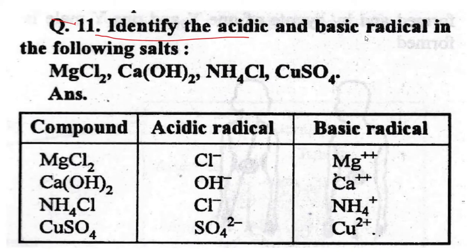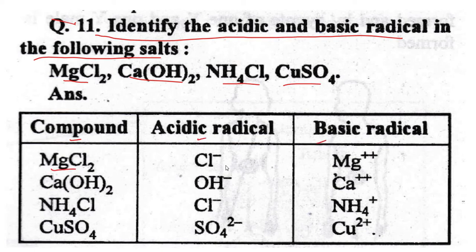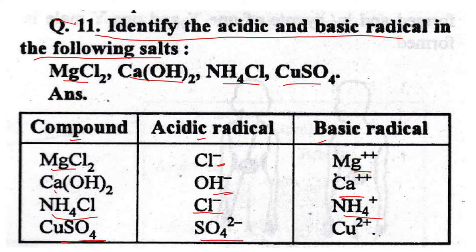Question No. 11. Identify the acidic and basic radicals in: MgCl2 — acidic radical Cl⁻, basic radical Mg²⁺. Ca(OH)2 — acidic radical OH⁻, basic radical Ca²⁺. NH4Cl — acidic radical Cl⁻, basic radical NH4⁺. CuSO4 — acidic radical SO4²⁻, basic radical Cu²⁺.